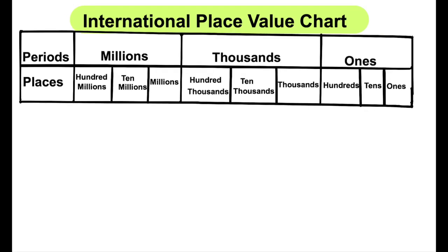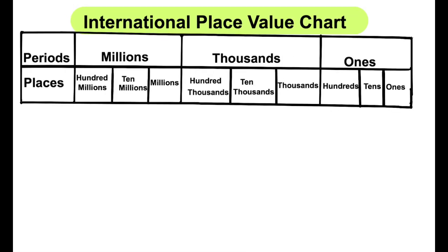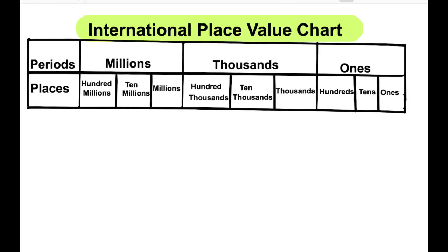Look at the international place value chart. The periods of the international place value chart are ones, thousands, and millions.